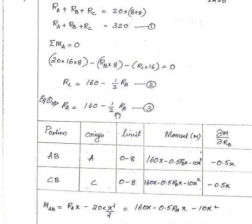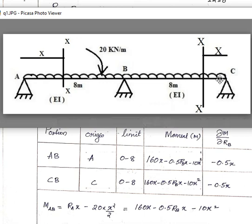For span BC, we take a section XX at distance x from point C, using C as the origin. The span AB has a limit of 0 to 8 m, and span BC also has a limit of 0 to 8 m. RC = 160 minus (1/2)RB.